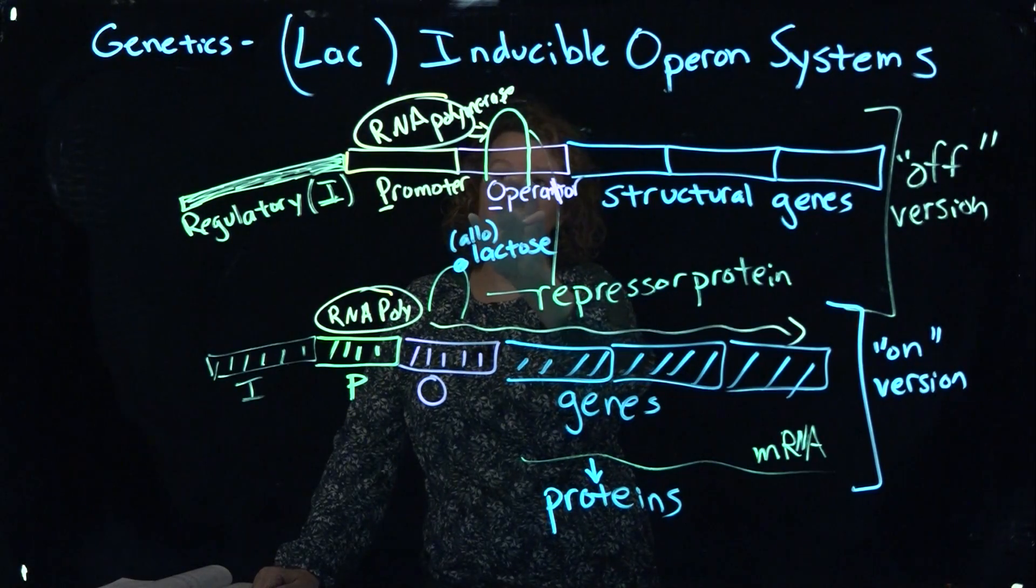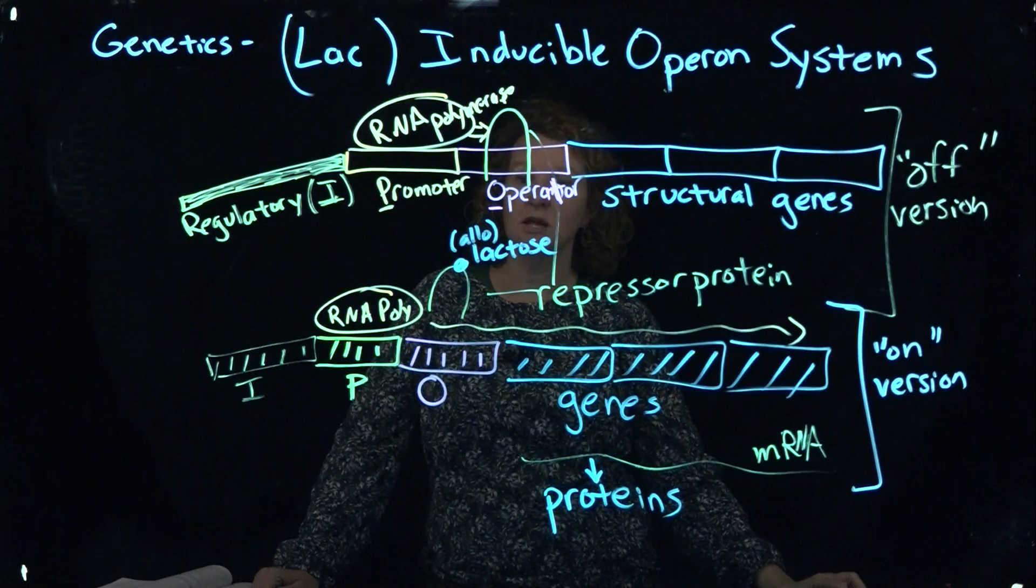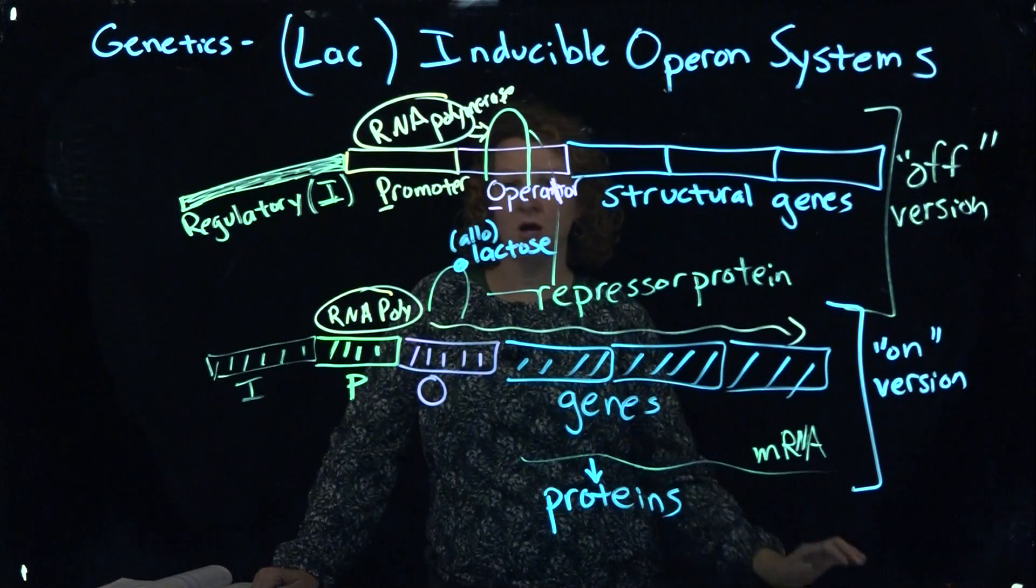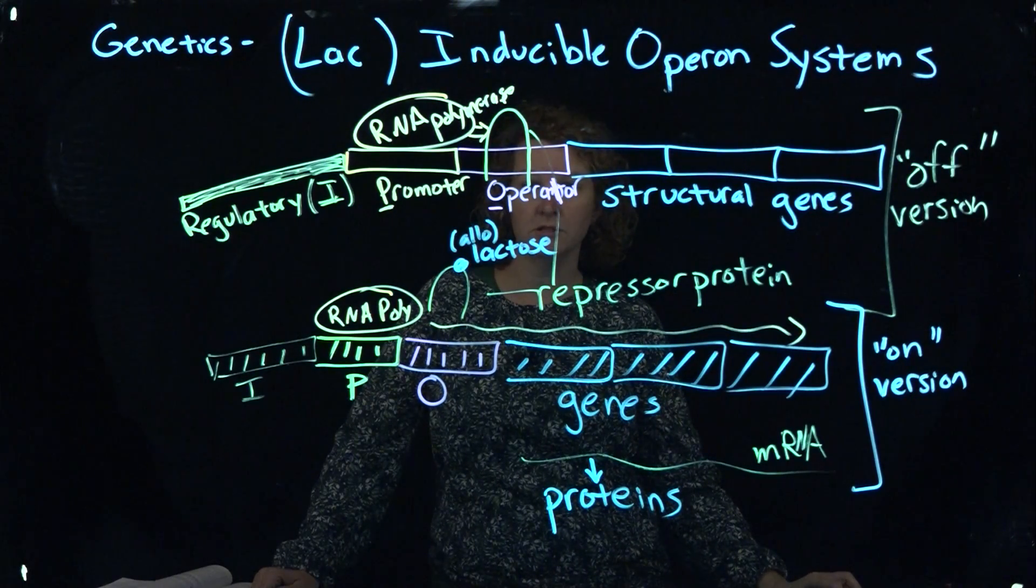If the repressor is bound to the operator, the RNA polymerase cannot proceed and go through transcription and translation. That's all I have on this. I thank you very much. Please contact me with any questions you have. This is Corey Andres at Central New Mexico Community College using CNS.